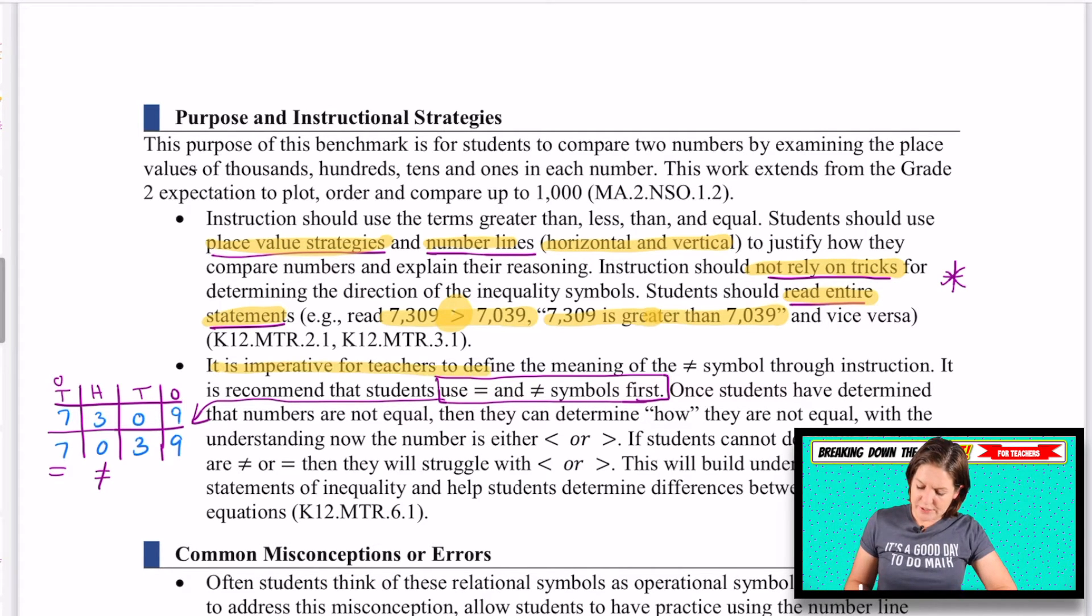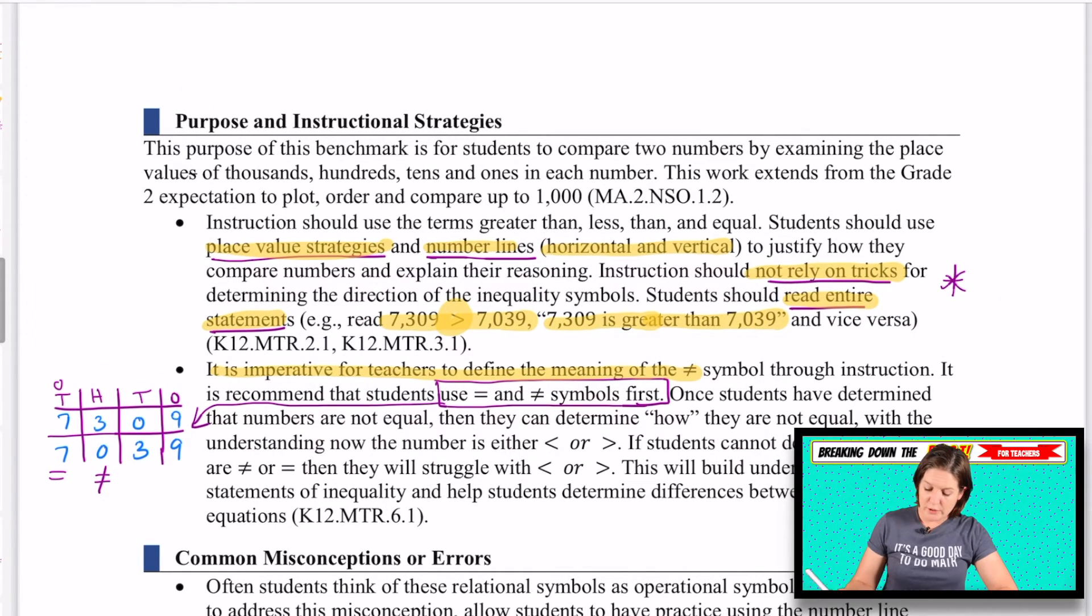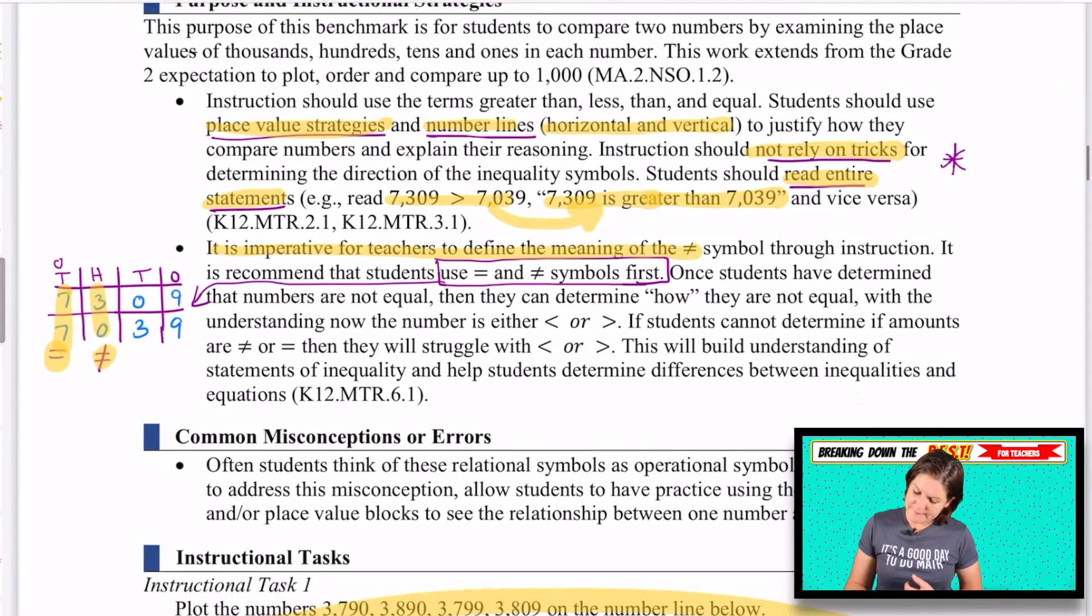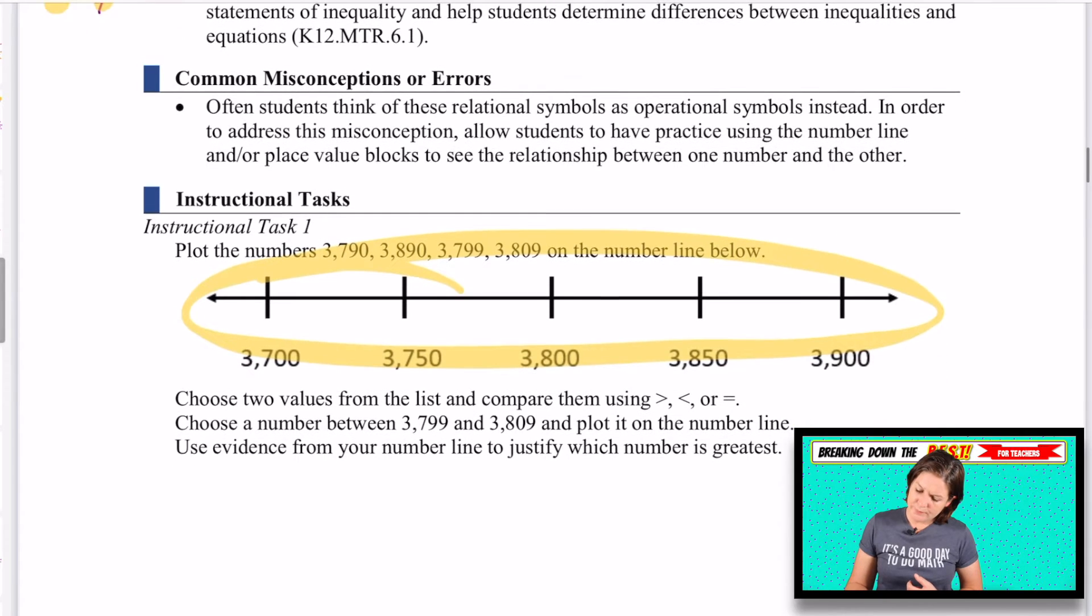Here it says it is imperative for teachers to define the meaning of the not equal symbol. Here's how I use it in what I'm teaching. If we had 7,309 and 7,039, and we put those in a place value chart, you would then compare the greatest place values first. We'd have seven and seven in the thousands place. Those are equal. Three and zero in the hundreds place. Those are not equal.